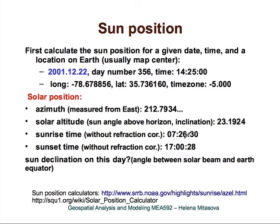The first parameter that influences the dynamics of solar radiation is Sun position relative to Earth. To compute the Sun position, we need to provide certain parameters, and as we said, it really changes minute by minute. So we need to provide the date, usually given as day number, and time. We also need the location on Earth, which will usually be given as latitude, longitude, and time zone, so that this time can be properly related to the time zone.